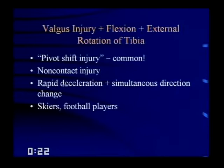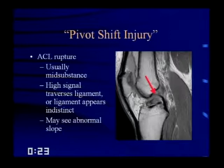The valgus injury with flexion and external rotation of the tibia is the most common injury we see — the pivot shift injury. It's a non-contact injury due to rapid deceleration and simultaneous direction changes, common in skiers and football players. This usually results in ACL ruptures, typically mid-substance but sometimes at either attachment. You'll see high signal traversing the ligament, or the ligament appears overall indistinct with an abnormal slope. At the time of ACL rupture, the tibia moves anteriorly and superiorly, causing impactions on the posterolateral tibia and the lateral femoral condyle.